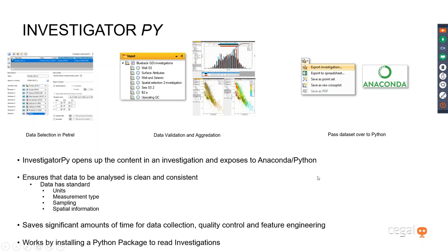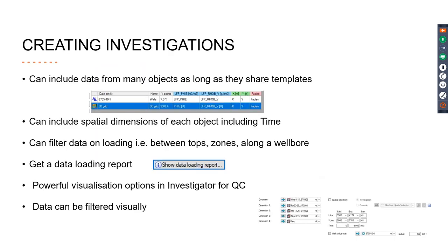All that's required to work with this is to install a Python package which will read your investigations. The benefits of Investigator Py are really in the investigator itself. You can combine many different objects together in your investigation as long as they share the same Petrel template. You can also include the spatial dimensions of objects, including time. Most importantly, you can filter on relevant objects — for example, between well tops, in zones or along a wellbore. This is a really powerful feature compared to doing this standalone in Python with LAS files. The Investigator Py can also give you a data loading report which can tell you if any of your objects are missing data. You also have standard visualization options in the investigator for a visual QC of the data before you go to Python.